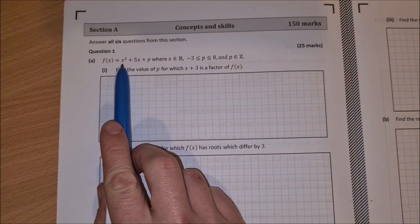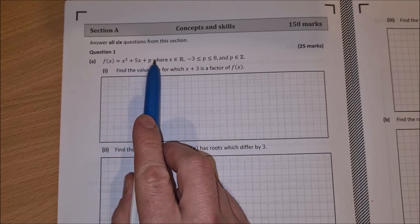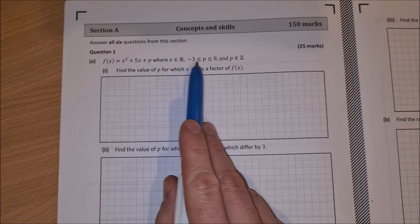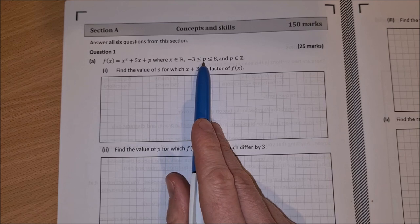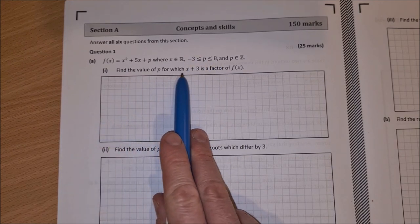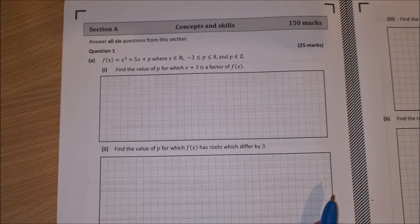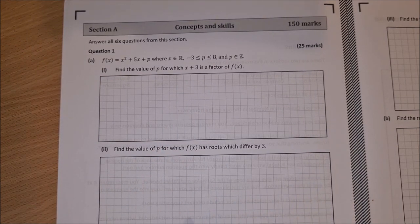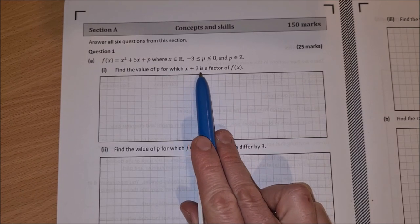f(x) equals x squared plus 5x plus p, where x is an element of the real numbers, and p is some integer between minus 3 and 8. Find the value of p for which x plus 3 is a factor of f(x). So for this one, if x plus 3 is a factor,